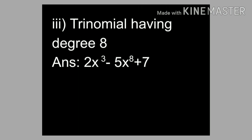Question 3: trinomial having degree 8. We have to write 3 terms because it is a trinomial. The answer is 2x³ - 5x⁸ + 7. The greatest index is 8, so the degree is 8.